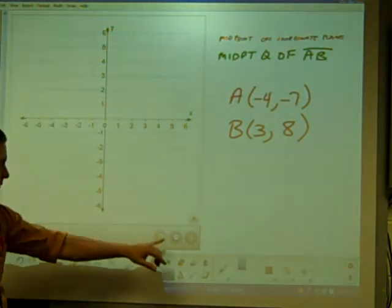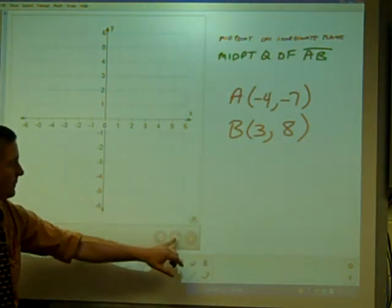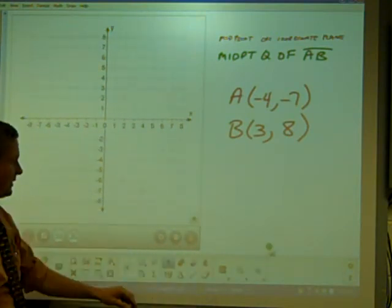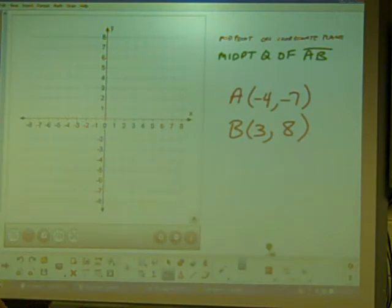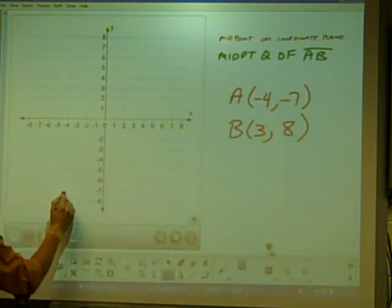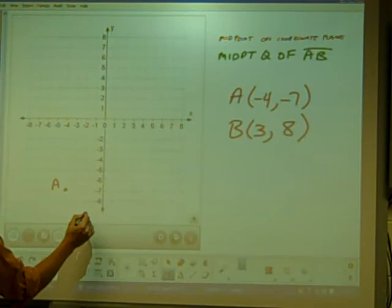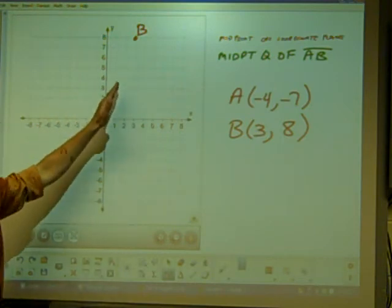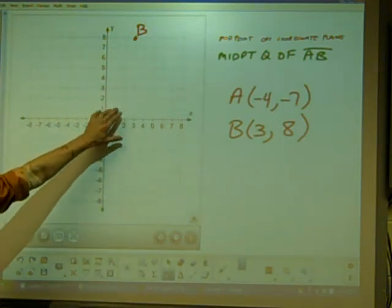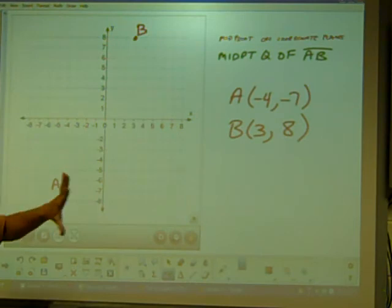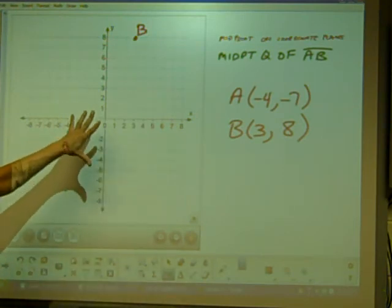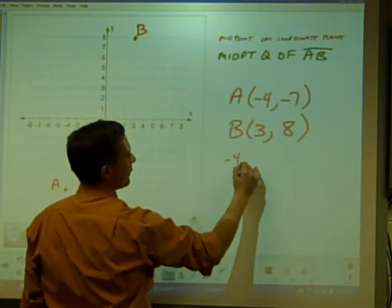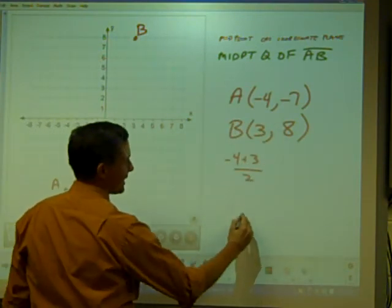I'm going to change my scale, shrink it down. Negative 4, negative 7 is right here - A. 3, 8 - B. Again, we'll picture Q, the midpoint, somewhere in the middle, around here. We have a good guess. I don't even really have to graph it. It's the average of the endpoints. I have the endpoints, so I average them. Negative 4 plus 3 over 2 will be negative half. 8 and negative 7 is 1 half.